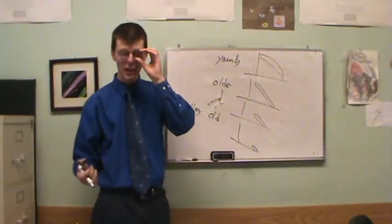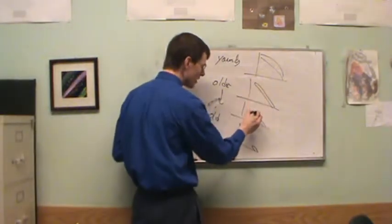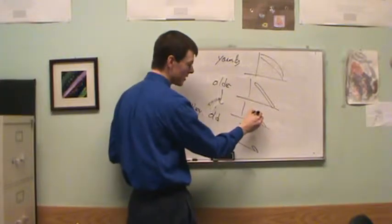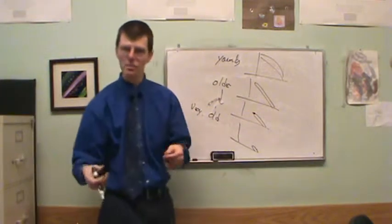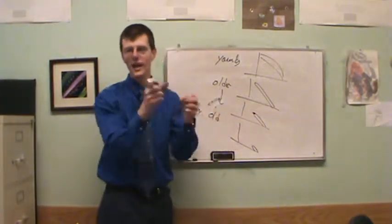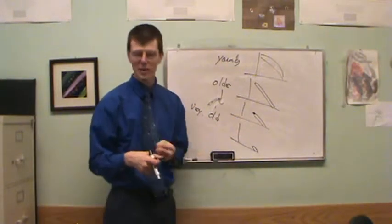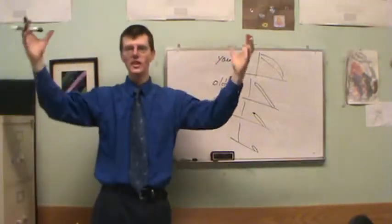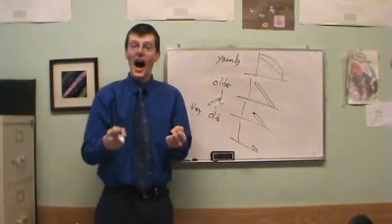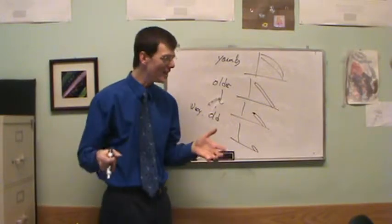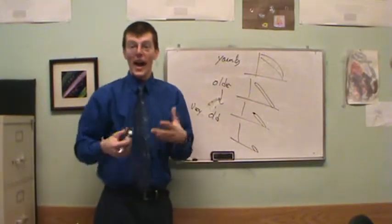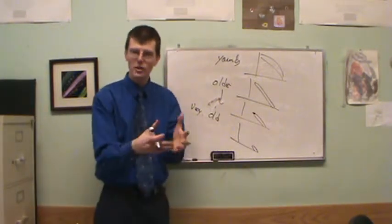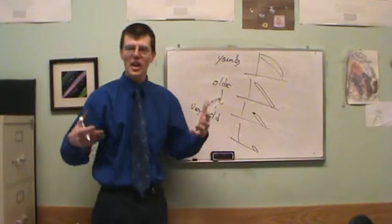This gives us a method for dating star clusters. We look at what we call the turnoff point on the main sequence — the top of the remaining main sequence — and based on the mass and fuel at that point, we can calculate how long those stars have been burning. For example, if the turnoff point corresponds to stars that take 3 billion years to leave, then the cluster is 3 billion years old.